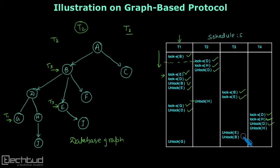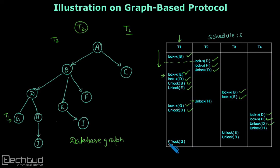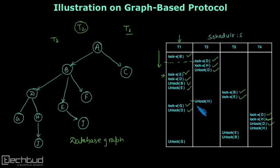After this, transaction T3 resumes and unlocks E, then unlocks B. Finally, G is unlocked by transaction T1. We can see that we are able to execute this schedule following the graph-based protocol with no conflict. So this schedule is a valid schedule for graph-based protocol, and it is basically following graph-based protocol.